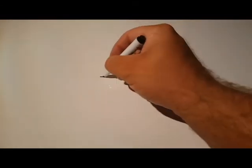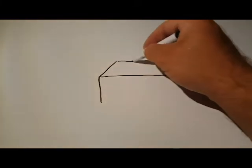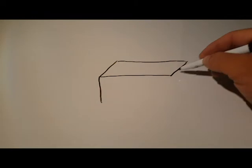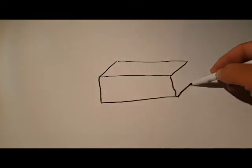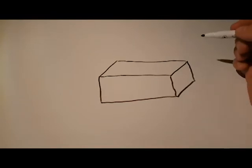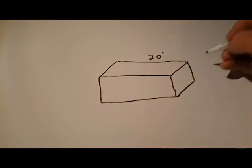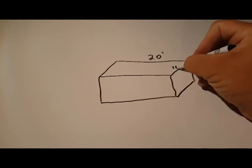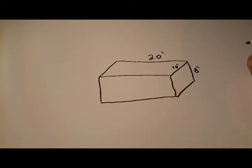Alright, so first things first, let's draw our swimming pool. Now, let's imagine this is 20 feet, this length is 10 feet, and this length is 8 feet.